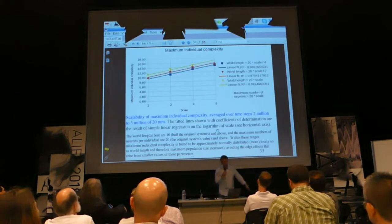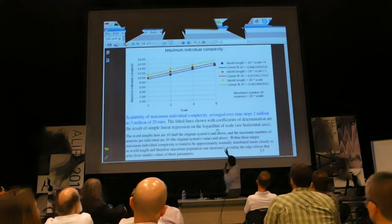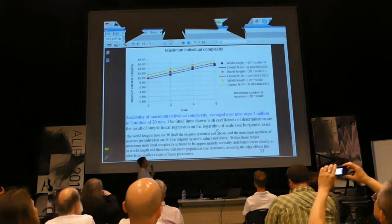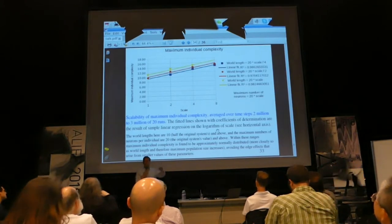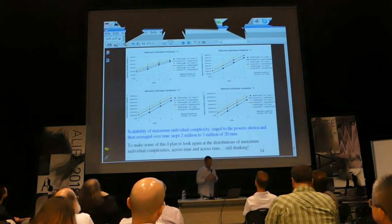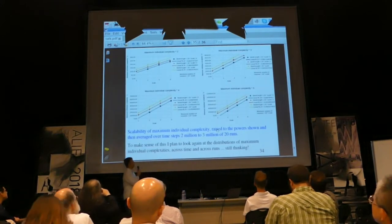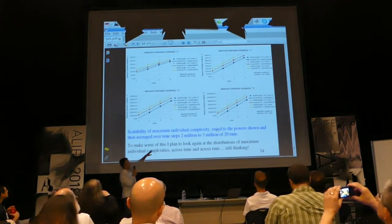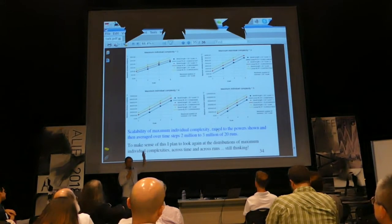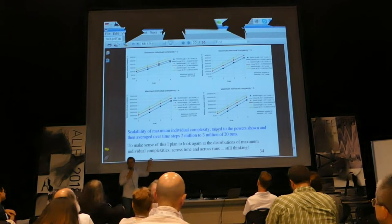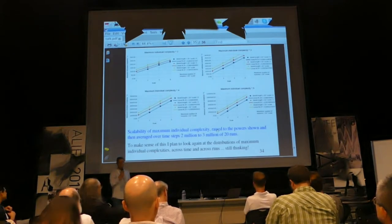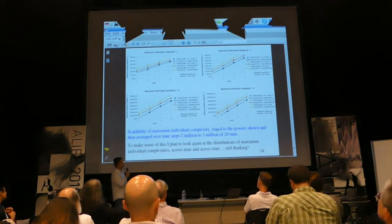At first I was really happy about that result — it's got nice coefficients of determination. Then I realized I could try to do better. I had in mind to tweak the power of the complexity a tiny bit, maybe 0.99 or raise it to the power of 1.01. Then a really strange thing happened that I'm still trying to get my head around. You can raise this complexity to really high powers — all the way up to four seems to be about right — and you can still get this linear relationship. This is completely counterintuitive. I think it has to do with the distribution of the maximum complexities, but I've spent a number of sleepless nights trying to get my head around it and it's still a work in progress.